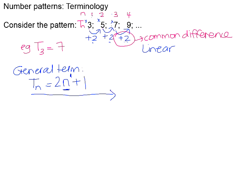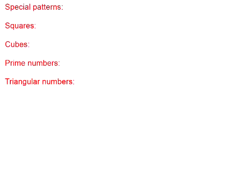Let's take a look at some special patterns. The first is the pattern of square numbers, which is literally just squaring 1, squaring 2, squaring 3, etc. So 1 squared is 1, 2 squared is 4, 3 squared is 9, 4 squared is 16, 5 squared is 25. We could carry on and on. Whenever you see a pattern that looks like this, be aware that it is the pattern of square numbers.